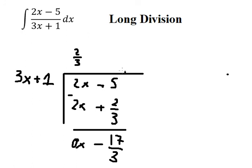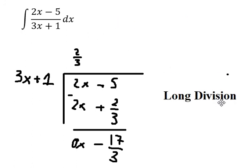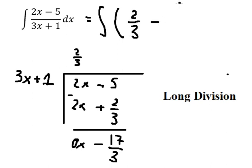So for this division we have 2/3, and the remainder is negative 17/3.